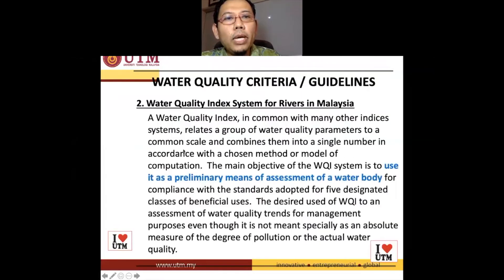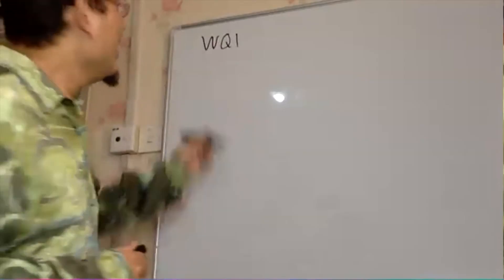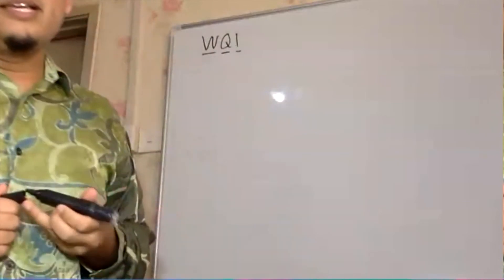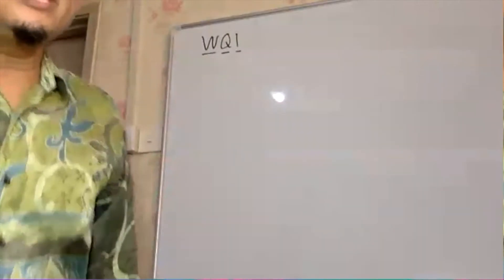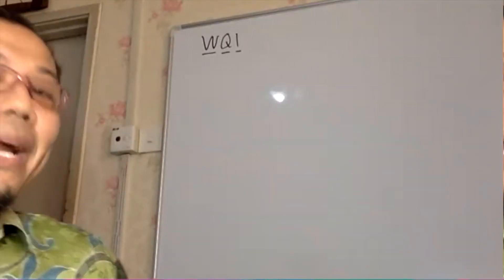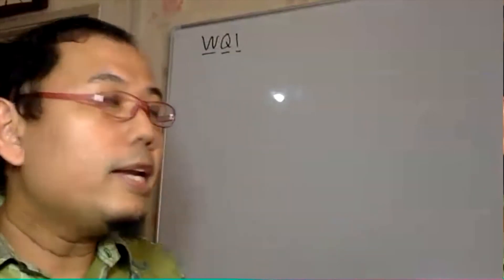You may also calculate the Water Quality Index, or WQI. This is the water quality index — you will be using certain values of parameters. You have to measure certain parameters and then you obtain the index for it.